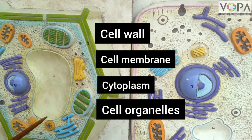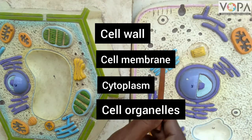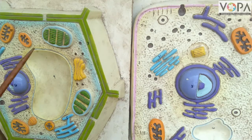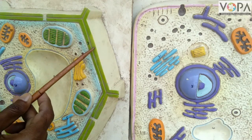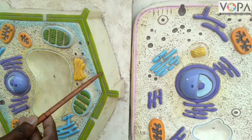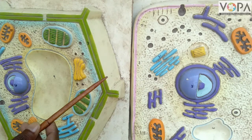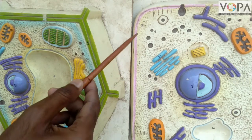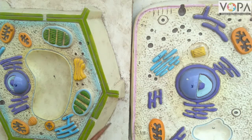All these are the cell organelles. Cell wall is the outermost covering of a cell. It is present only in the plant cell. In the animal cell, the cell wall is absent.